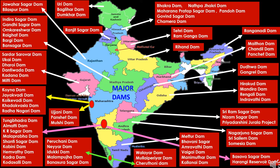In Uttarakhand, the first dam is Tehri Dam, the highest dam in India, constructed on the Bhagirathi River in Tehri. Second is Ramganga Dam, also called Kalagarh Dam, constructed on the Ramganga River in Pauri Garhwal. In Uttar Pradesh, the Rihand Dam is the biggest dam in terms of volume, also called Govind Vallabh Pant Sagar Dam, located in Sonbhadra district, constructed on the Rihand River which is a tributary of the Son River.